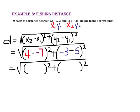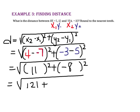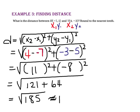4 minus negative 7 is 11 — we'll square that. Plus negative 3 minus 5 is negative 8 — we'll square that, then take the square root. 11 squared is 121 and negative 8 squared is 64. Adding these together: 121 plus 64 is 185. The square root of 185 is approximately 13.601. Since we need to round to the nearest tenth, our answer is 13.6.